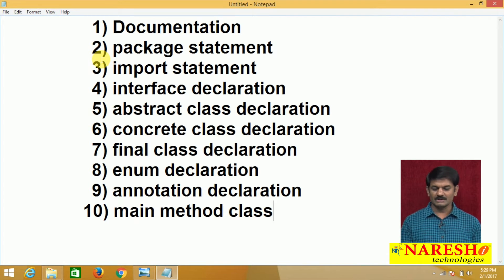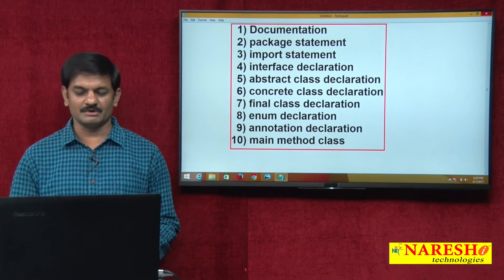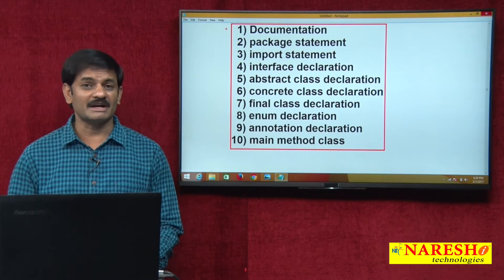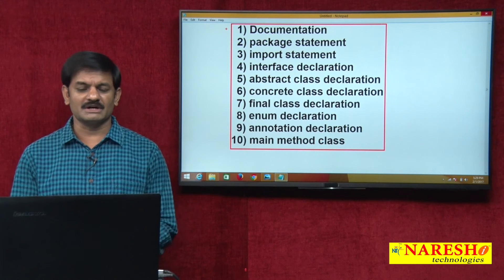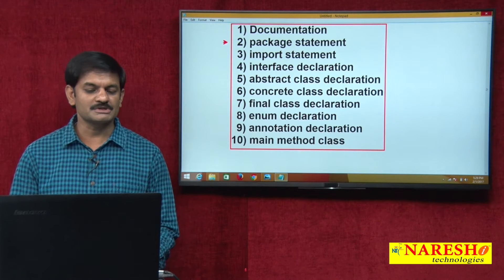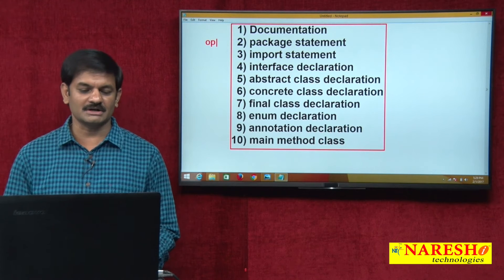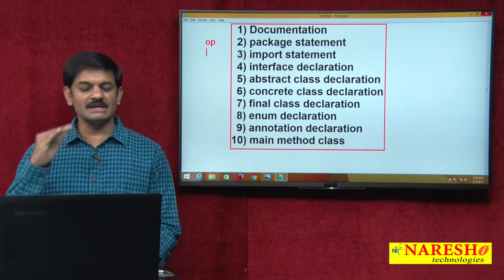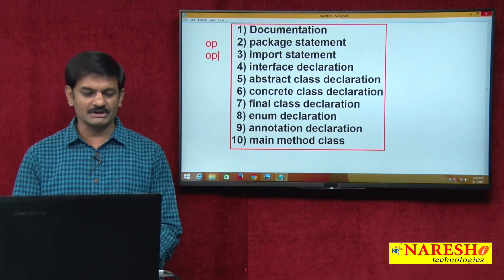What is Java source file structure? What you can place inside a Java source file is nothing but Java source file structure. Inside a Java file you can place these 10 members. Among these 10 members, what is mandatory, what is essential, what is optional? When planning to create a Java source file, the package statement is optional — it is not mandatory. If you are not using any other classes, then the import statement is also optional.